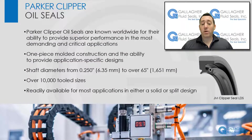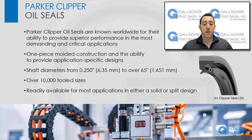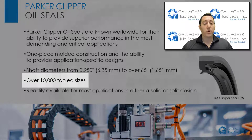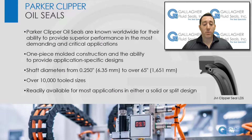Next, we are going to discuss Parker Clipper oil seals. These seals are known worldwide for their ability to provide superior performance in the most demanding and critical applications. A one-piece molded construction and the ability to provide application-specific designs, if needed, are just a few of the reasons Clipper seals are specified for critical applications. Clipper seals are available for shaft diameters from 0.250 inches (6.35 millimeters) to over 65 inches (1,651 millimeters), in both standard and high-performance elastomer compounds. With over 10,000 tooled sizes, Clipper seals are readily available for most applications in either a solid or split design, with a number of different seal profile designs for a wide variety of specific applications. Consult the Gallagher Seals website for a large offering of in-stock Parker Clipper seals available to ship same day.